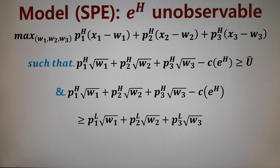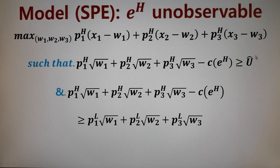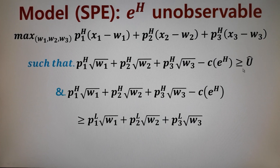Now let's get more realistic. We assume the effort level is not observable and not verifiable. What would be the sub-game perfect equilibrium? The principal wants to maximize profit. Assume EH (high effort) would be enforced. The first constraint is the participation constraint — the reservation utility level. If the utility from working for this principal is lower than the reservation utility, the agent will quit. So the agent's expected utility working for the principal must be greater than or equal to the reservation utility — in our example, 400.